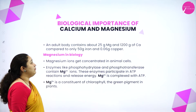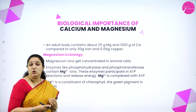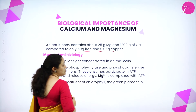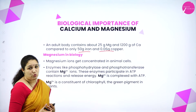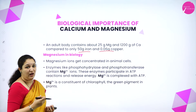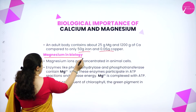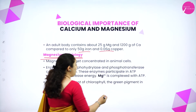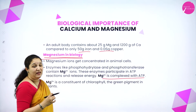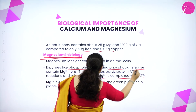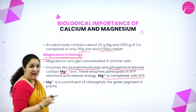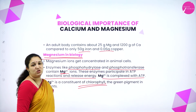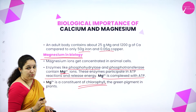Next is the biological importance of calcium and magnesium. Our body contains 25 grams of magnesium, 1200 grams of calcium, 50 grams of iron, and 0.06 grams of copper. Calcium is required in very large quantities. Magnesium ion is important as it forms a complex with ATP — the energy currency of the cell — and is present in enzymes like phosphorylase and phosphotransferase, which participate in ATP reactions and release energy.